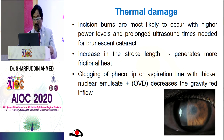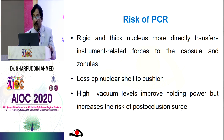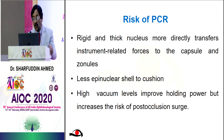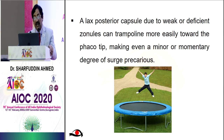Incision burns always occur due to thermal damage. Increased stroke length generates more frictional heat, clogging of the Faco tip or aspiration line with thicker nuclear emulsate, and OVD decreases the gravity fade-in flow. There is also endothelial cell loss and risk of PCR. A rigid, thick nucleus transmits instrument-related forces to the capsule and zonules, with less epinuclear shell to cushion. High vacuum levels improve holding power but increase the risk of post-occlusion surge. A lax posterior capsule due to weak or deficient zonules can prolapse more easily toward the Faco tip, making even a minor degree of surge precarious.